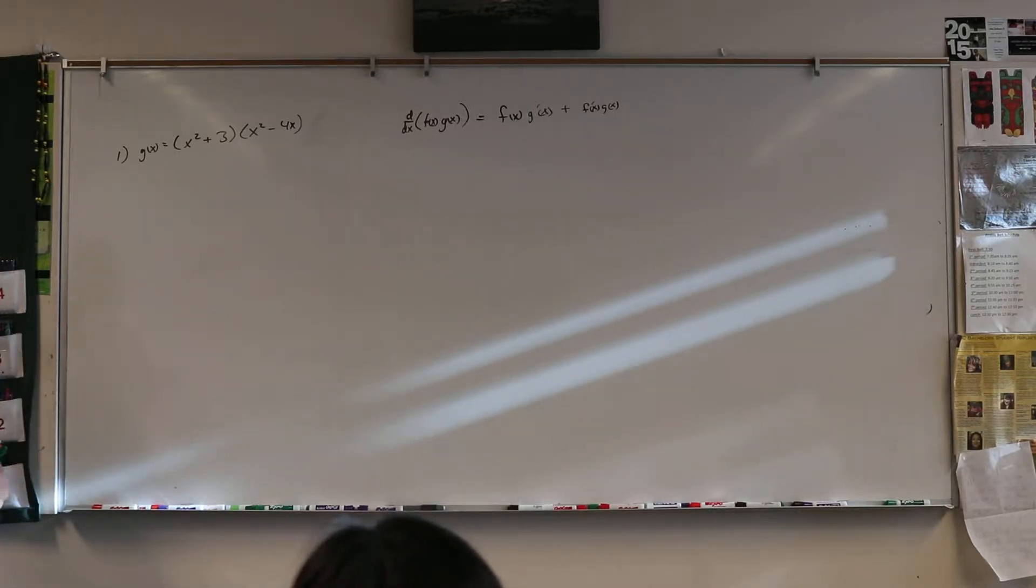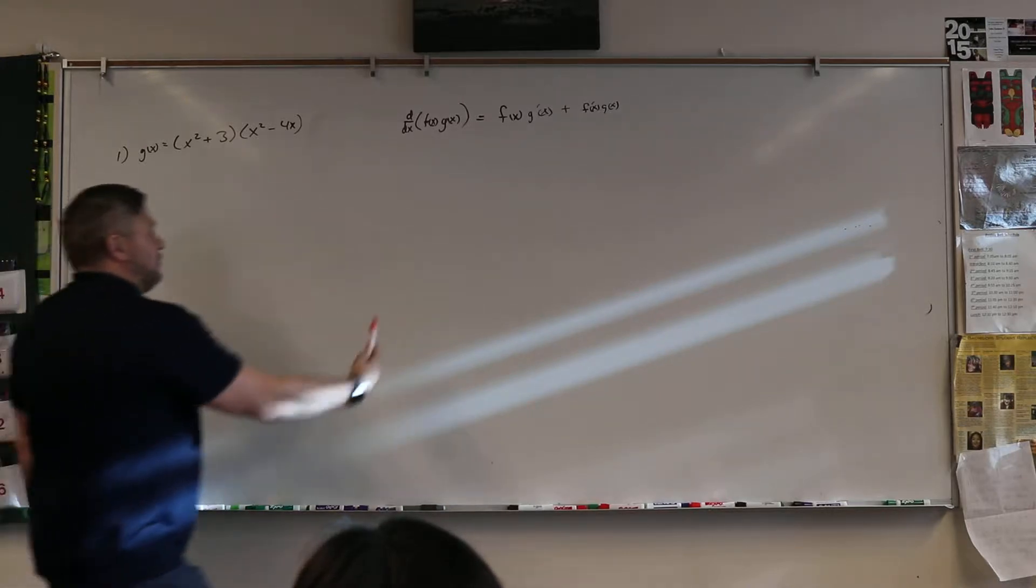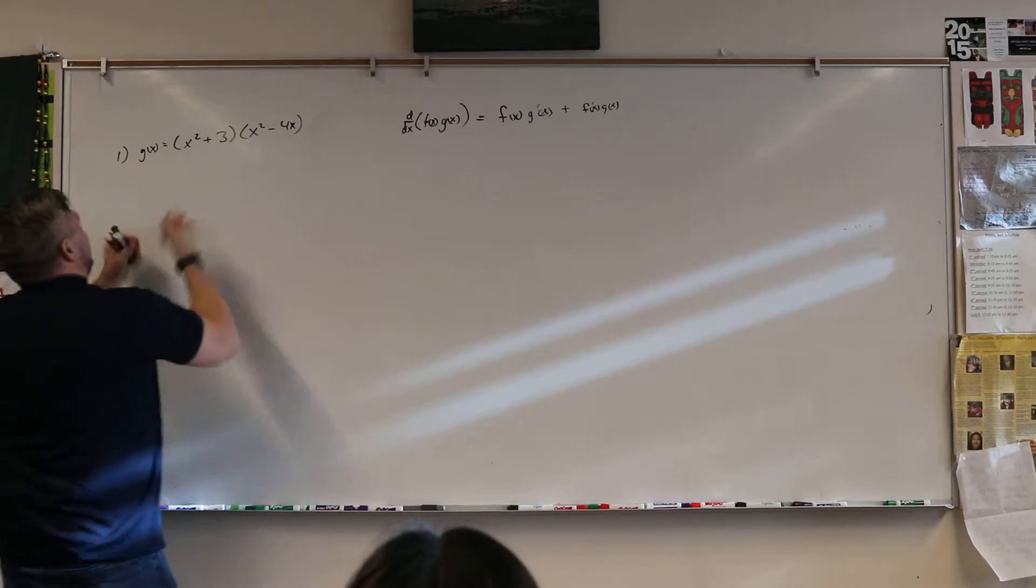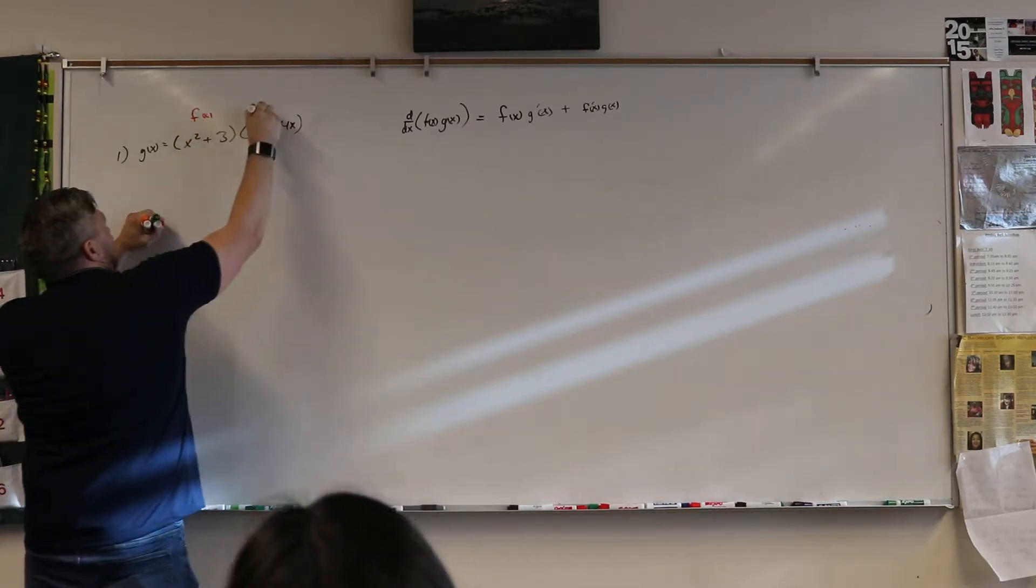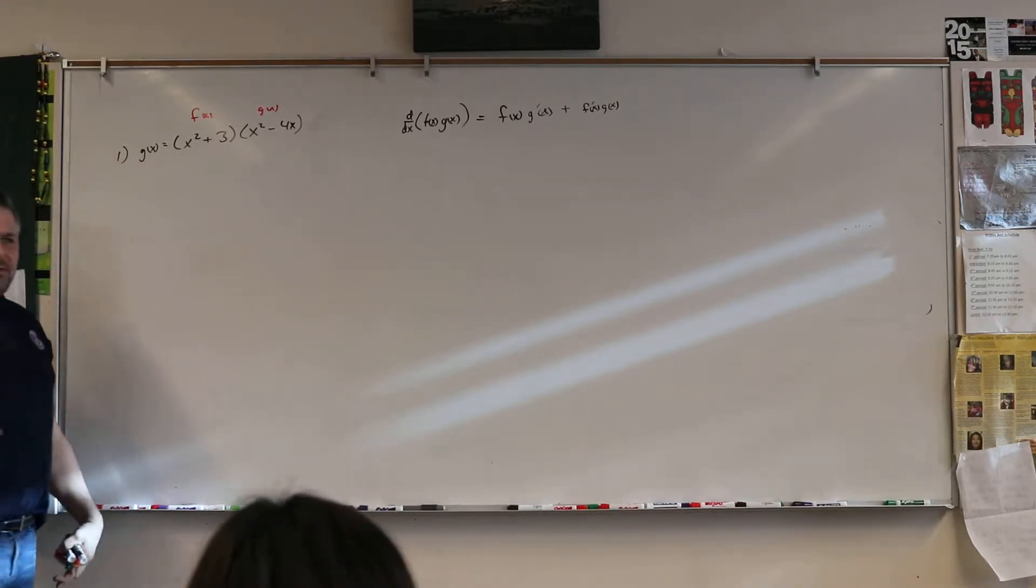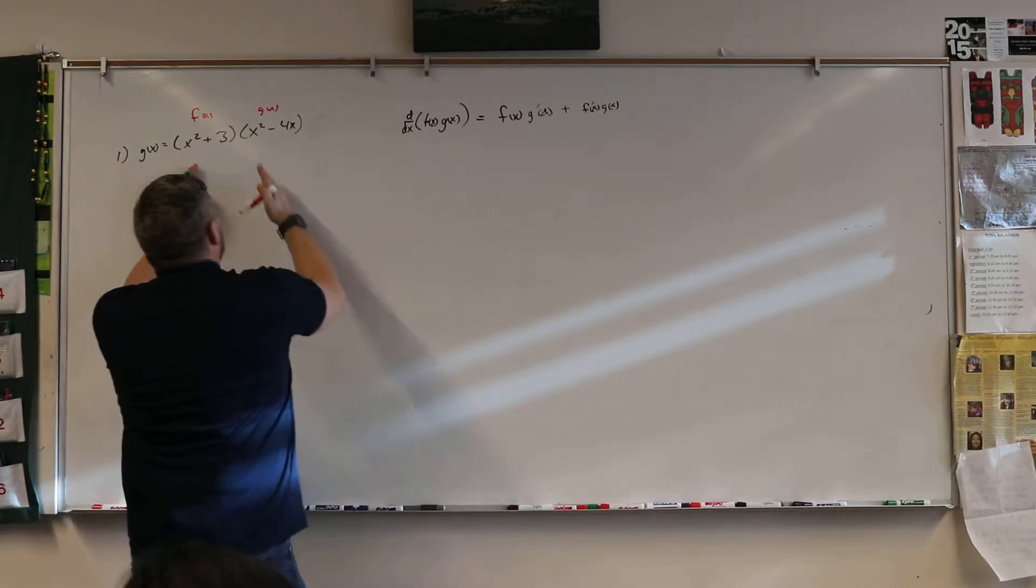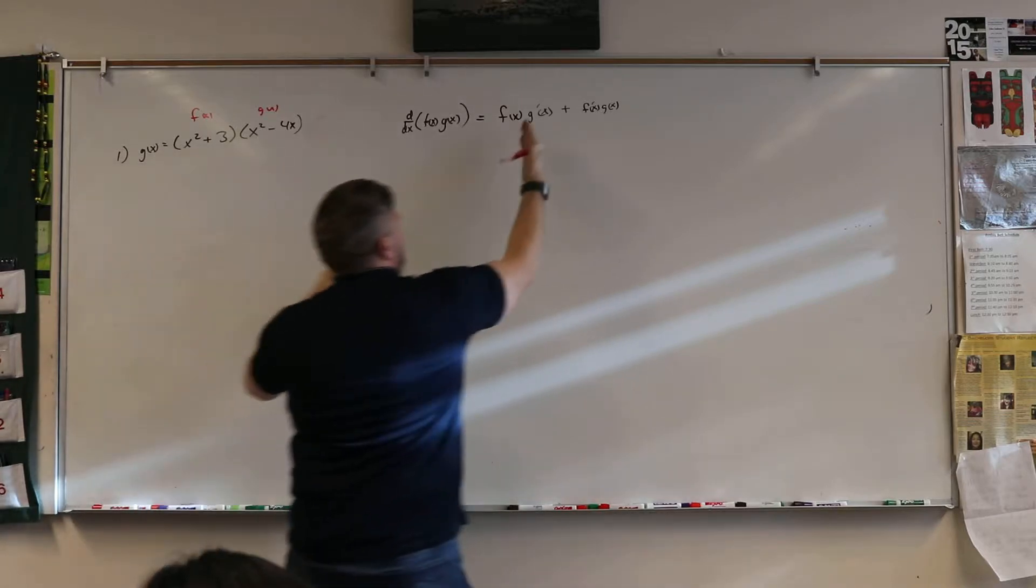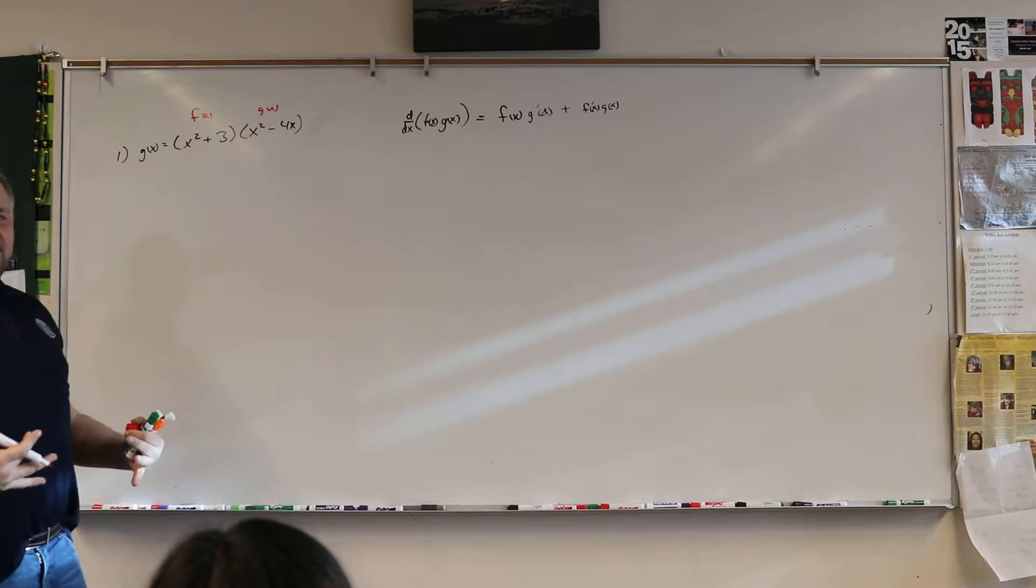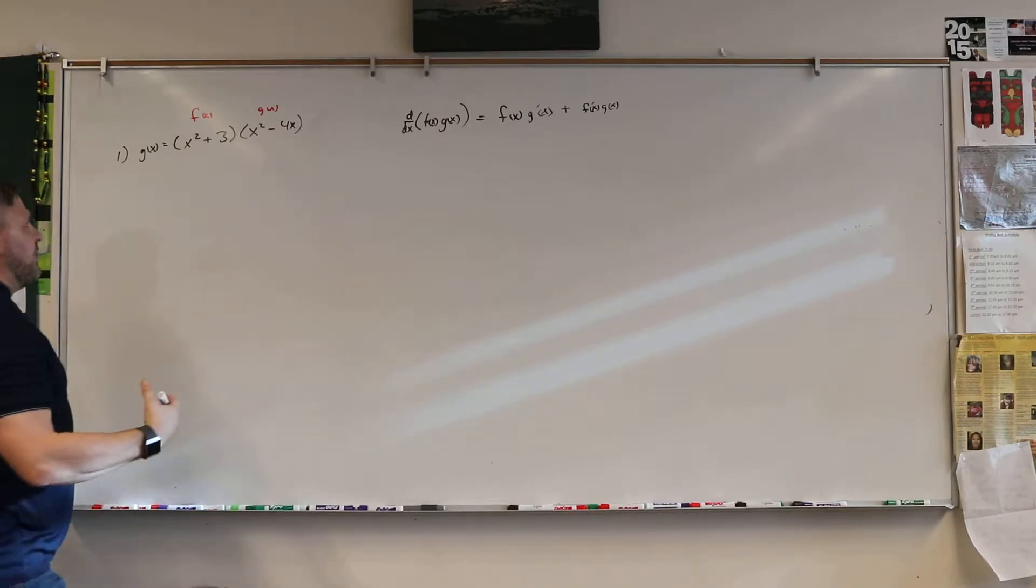All right, so to do the product rule you're supposed to follow the rule. You know f of g. All that means is like this is f, this is g. I know this says this is g of x. That's what's confusing. But really the first one's f of x, the second one's g of x. And so that's when we're going to take those and we'll find the prime of those, or the derivative.